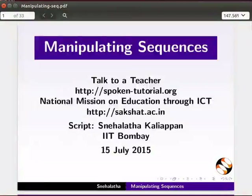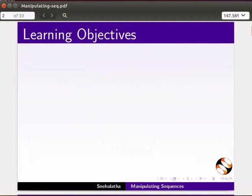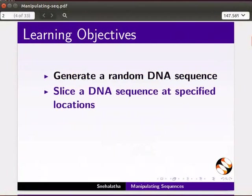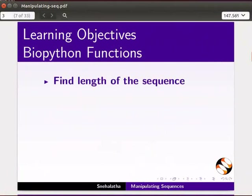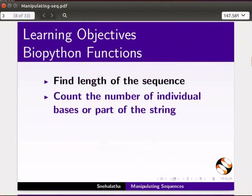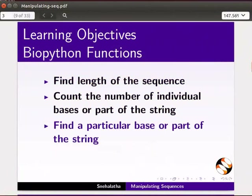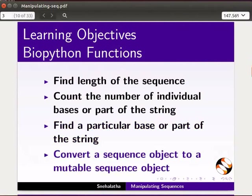Welcome to this tutorial on manipulating sequences. In this tutorial, we will use BioPython tools to generate a random DNA sequence, slice a DNA sequence at specified locations, join two sequences together to form a new sequence — that is, to concatenate — find the length of the sequence, count the number of individual bases or part of the string, find a particular base or part of the string, and convert a sequence object to a mutable sequence object.